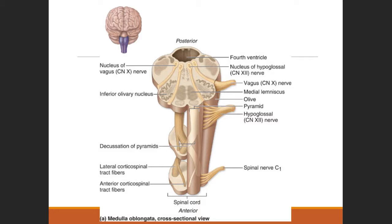Also in the medulla is the crossing over of motor fibers, called the decussation of pyramids. The right side of the brain controls the left side of the body and vice versa. Voluntary actions originate in one hemisphere, descend into the brain stem, and cross over to the opposite side through the medulla. Ninety percent of all motor fibers cross over in the medulla; the remaining ten percent stay ipsilateral down the cord and cross over at the level where they exit.